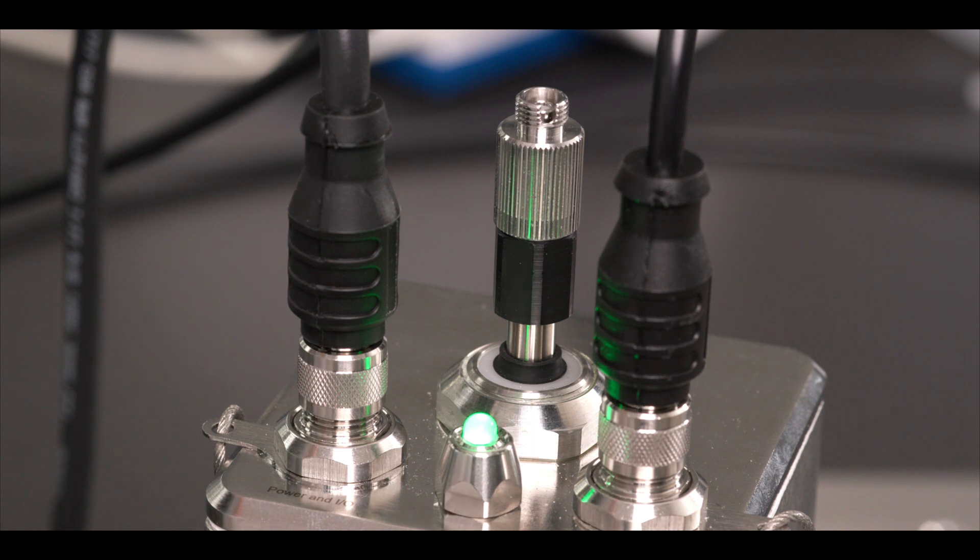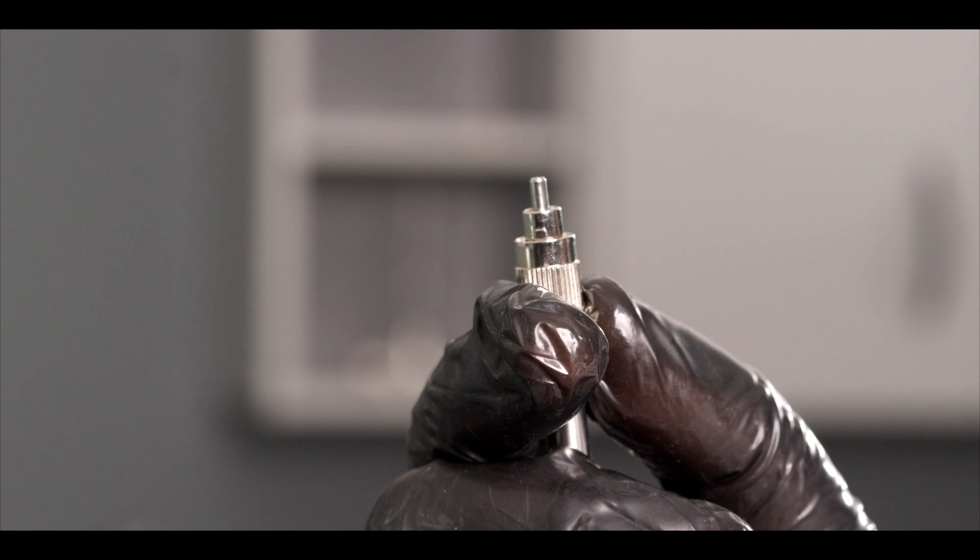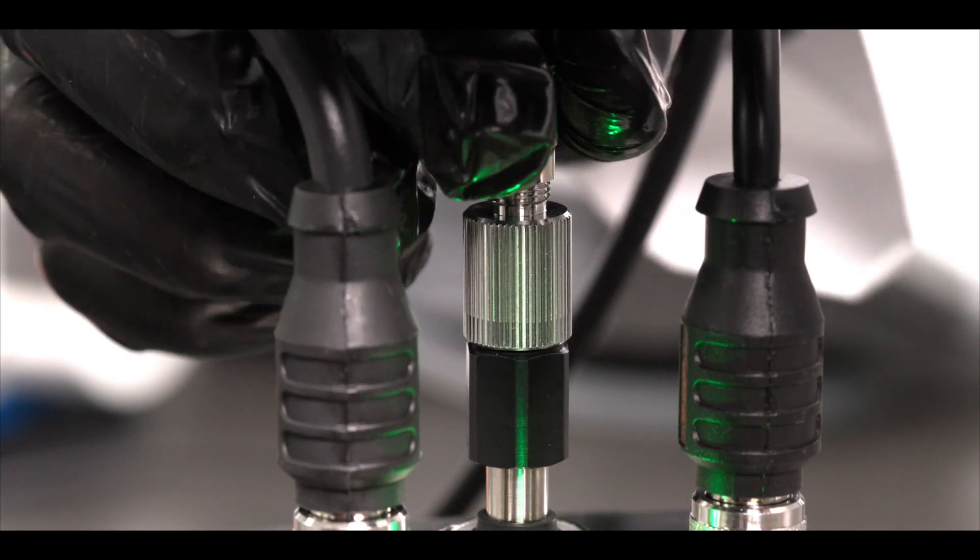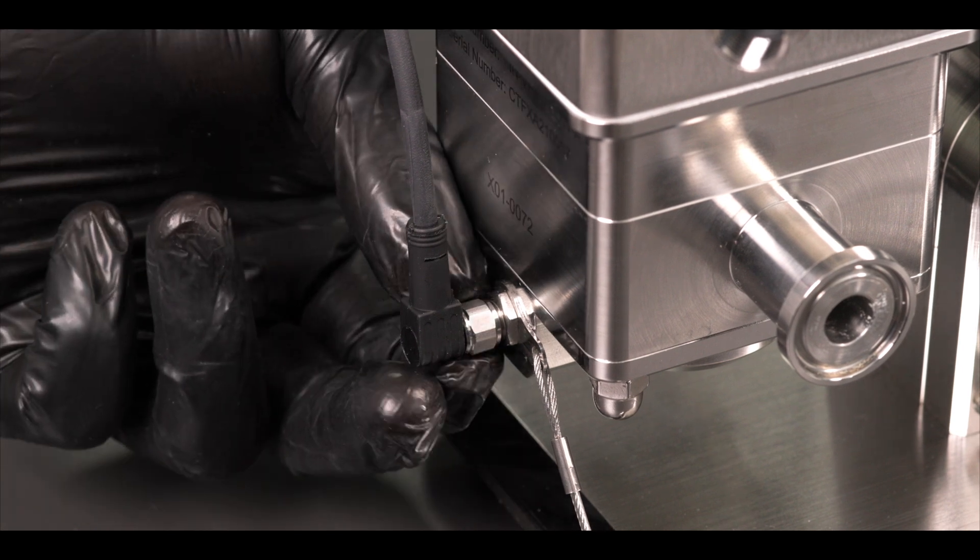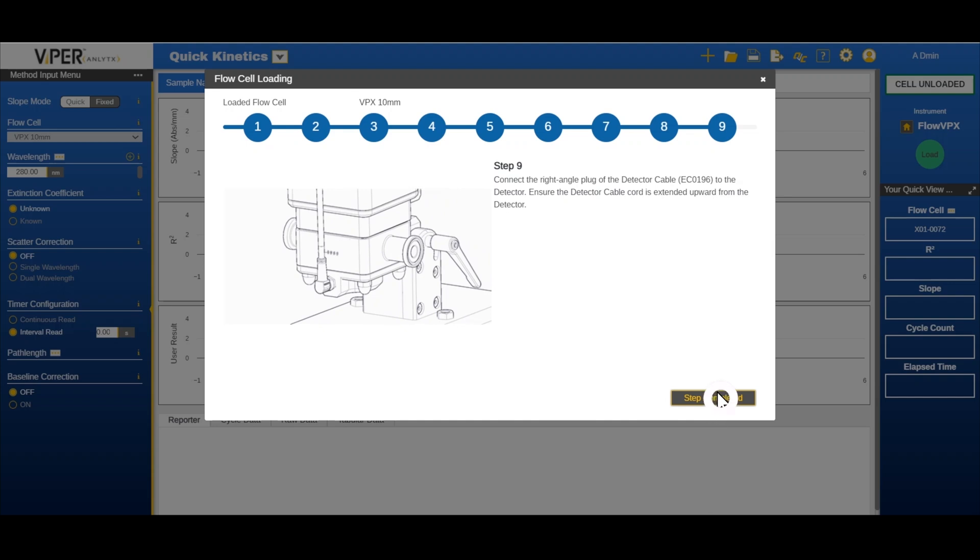Wait for Viper to find the zero position. Then click next step. Connect the delivery fiber to the fiber optic component by lining up the notch with the keyway. Then connect the Cary 60 detector cable to the detector, making sure it is pointing upwards. Click step completed.